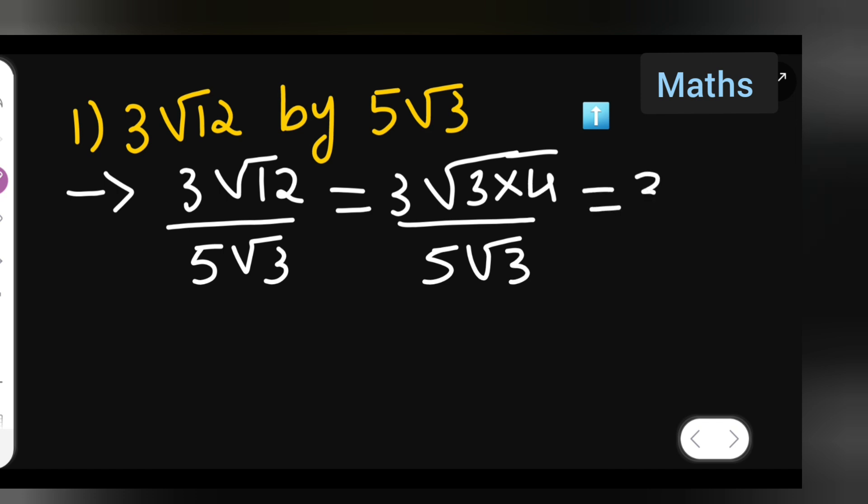Now, split it. 3√3. I am not getting a place over here, so let me write down here. So, is equal to 3√3 multiplied by √4 upon 5√3.